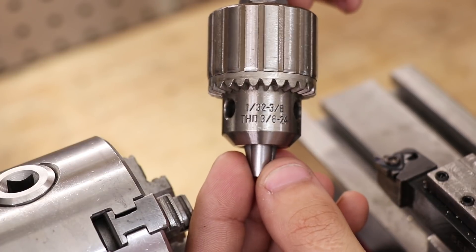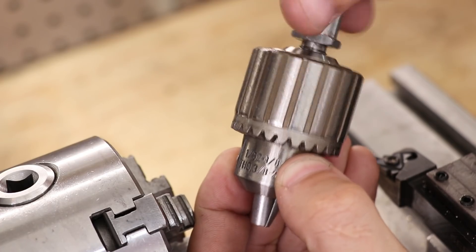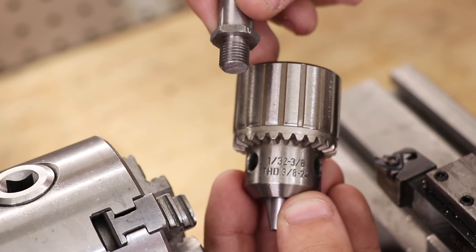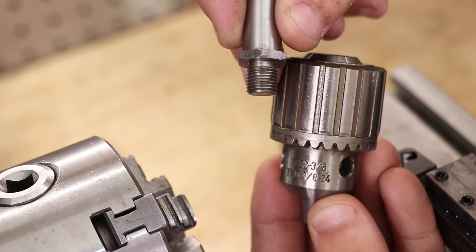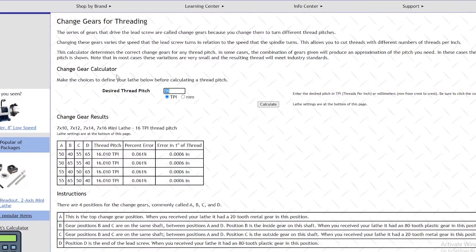Now the thread I want to cut is part of a quick change tool holder for the mill, and it needs a 3/8" 24 pitch thread. This will allow me to thread on my Rohm small size Jacob's chuck and use it in the mill. I'll need a 24 TPI thread, and according to the calculator, I'll need a 50, 55, 60, and 65 tooth gear.